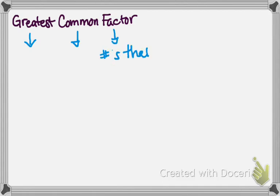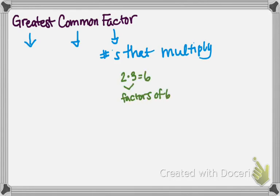And factor, that's the numbers that multiply to get to that number. For example, 2 times 3 equals 6. So that means that 2 and 3 are factors of 6.